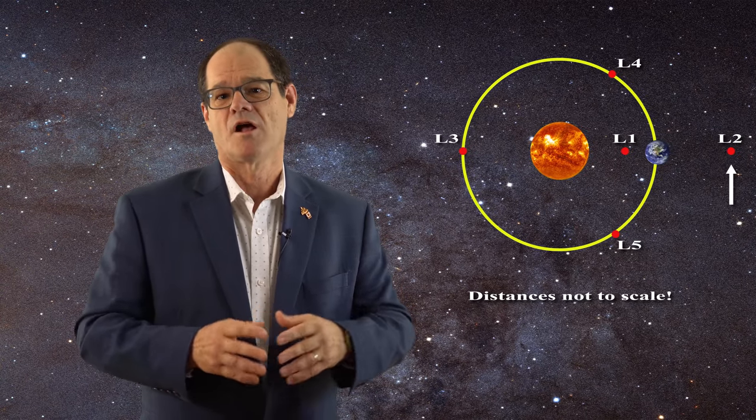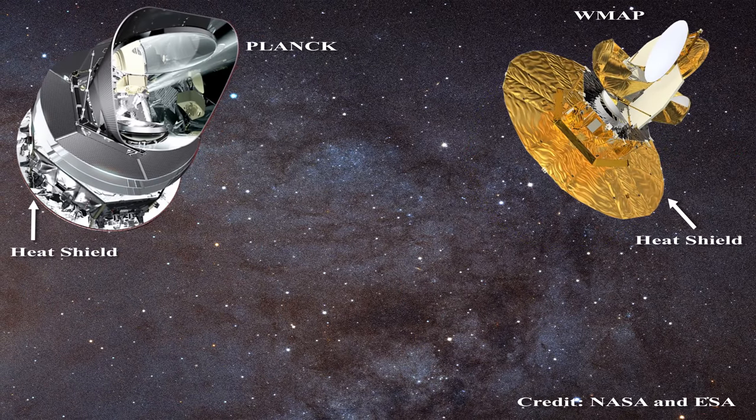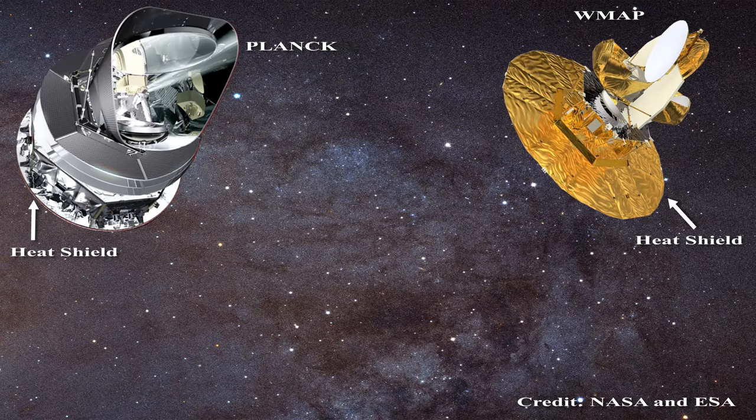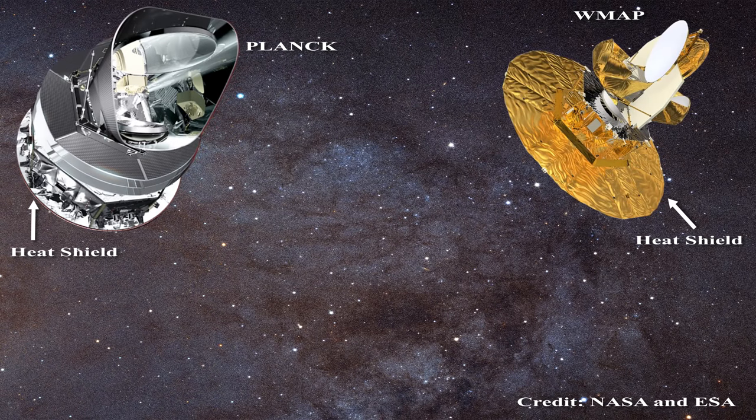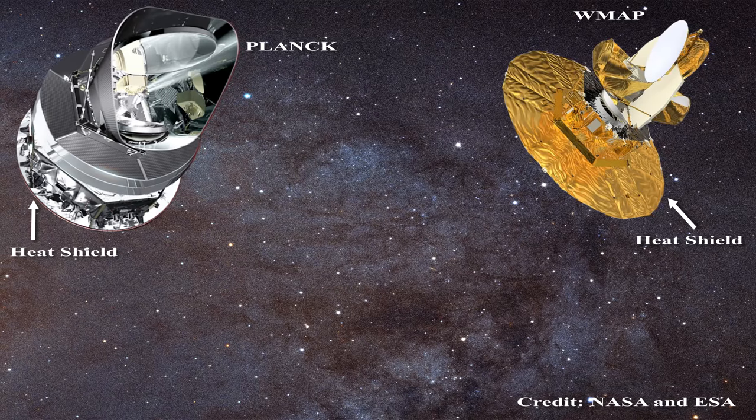There are a total of five Lagrangian points. Located at L2 both WMAP and the Planck satellites were shielded from microwaves originating from the sun or the earth. Again the satellites had a heat shield to guard against electromagnetic heating.